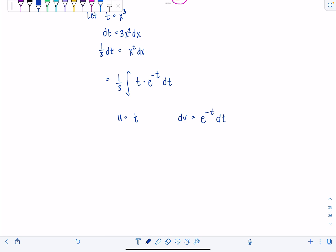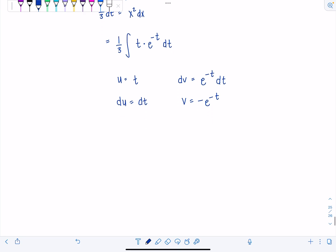And what about the 1 3rd you say? Don't worry about it. It's just going to sit outside the whole time. So du is equal to 1 times dt. And then v would be negative e to the negative t. All right, looks good.